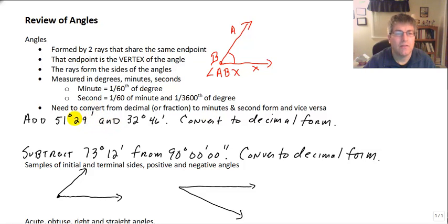I may ask you to add 51 degrees 29 minutes and 32 degrees 46 minutes. We can add these together: 32 plus 51 degrees, 46 plus 29 minutes. If we add those together, that's 83 degrees 75 minutes. Well, the 75 is more than 60, so we are going to add another degree to give us 84 degrees and 15 minutes.